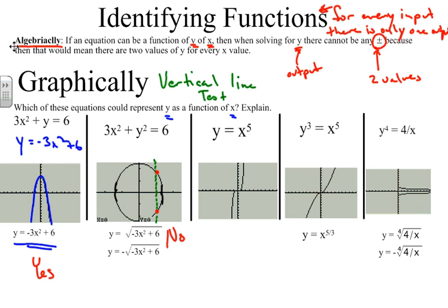We take y = x⁵. Once again, solve for y, which it already is. Use the vertical line test. We can say yes, this is a function. For every input, there is one y output.